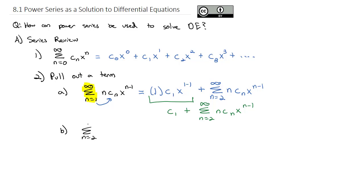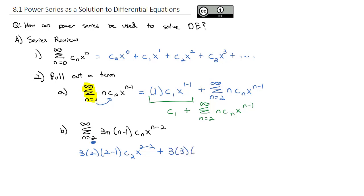Now let's pull two terms from the sum as n goes from 2 to infinity of 3n(n−1)·c_n·x^(n−2). Running the factory for two hours: at n = 2 we get 3·2·(2−1)·c₂·x^(2−2), and at n = 3 we get 3·3·(3−1)·c₃·x^(3−2). If we pull another term out, the remaining sum runs from n = 4 to infinity of 3n(n−1)·c_n·x^(n−2).